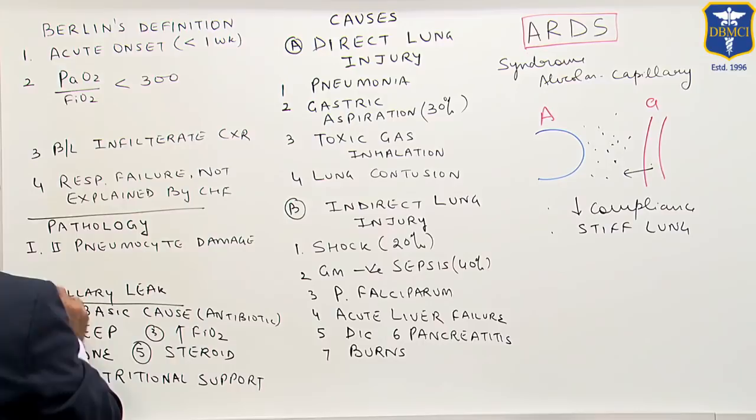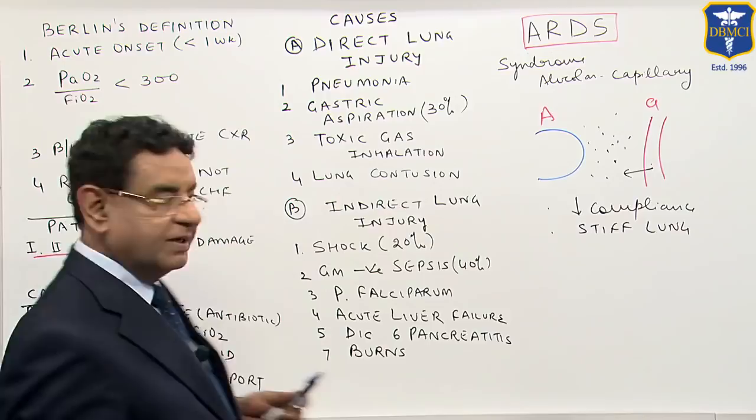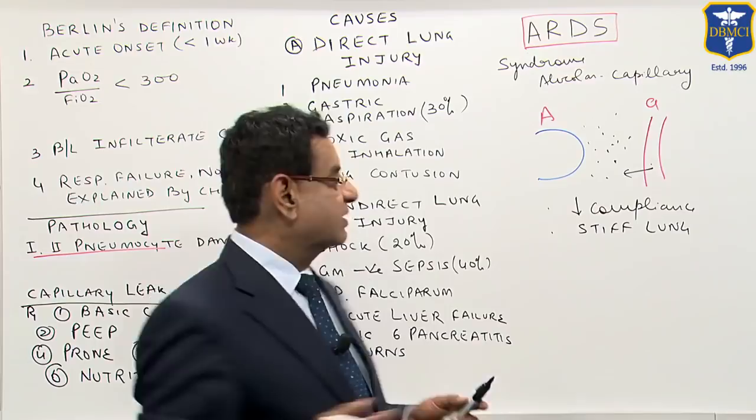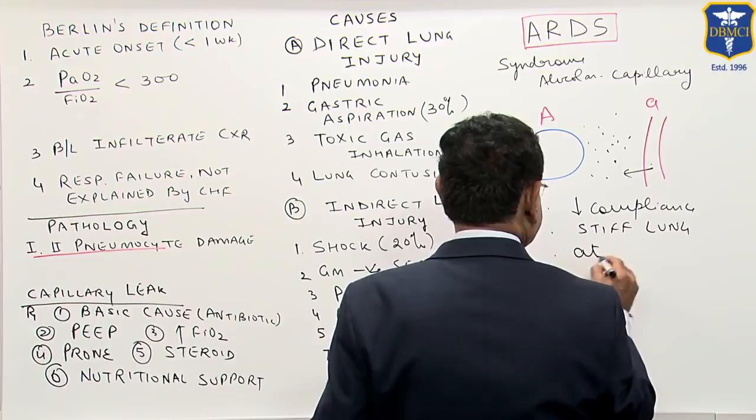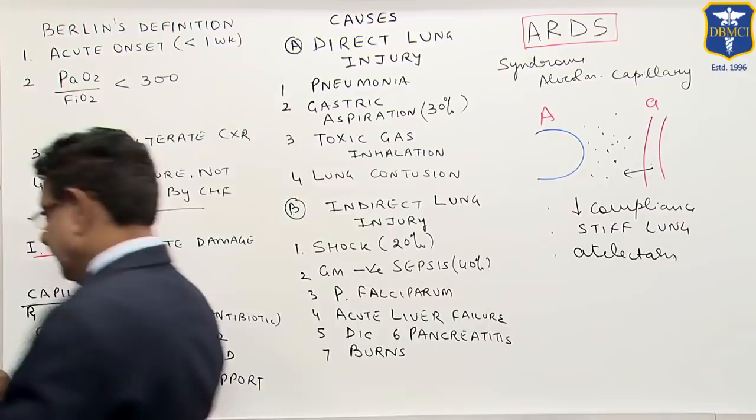There also occurs damage to type 1 and type 2 pneumocytes, and we know very well that type 2 pneumocytes produce the surfactant. So surfactant will be less, and that leads to collapse of the alveoli — lung atelectasis. This is the basic pathology.